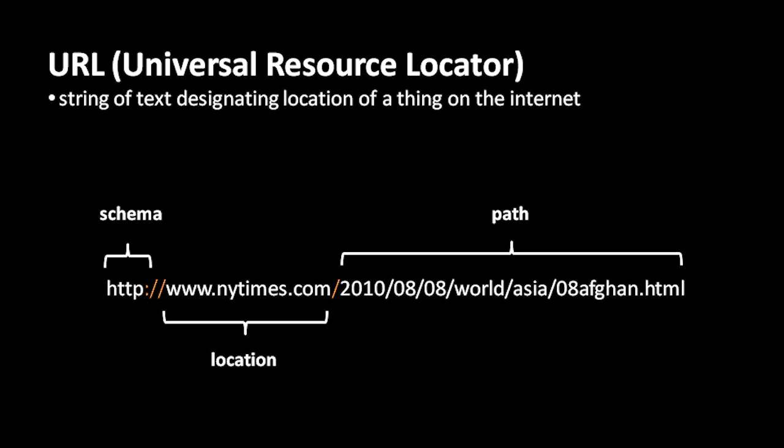In this case, the path looks a lot like a file path, but it doesn't necessarily mean that we're requesting a file named 08-afghan.html inside the directories 2010-08-08-world-asia. That might be the case, but it isn't necessarily the case. It's really entirely up to the computer at the New York Times to determine what this path specifies. So you may often see URLs where the path looks like a file path, but there's no necessary connection between file paths and URLs. Lastly, notice that the URL doesn't have any spaces in it — URLs are not allowed to have spaces.